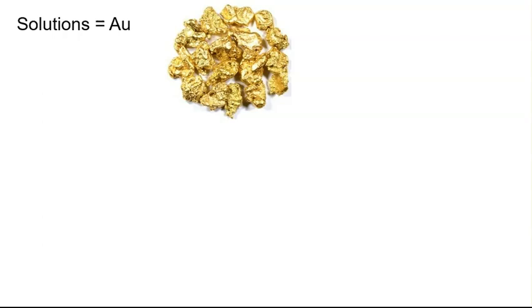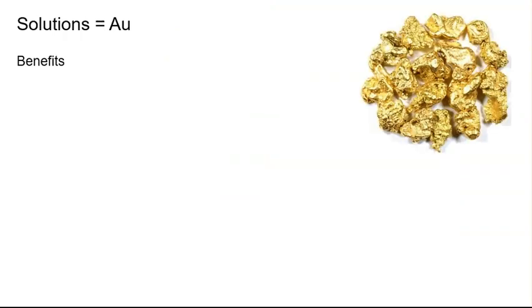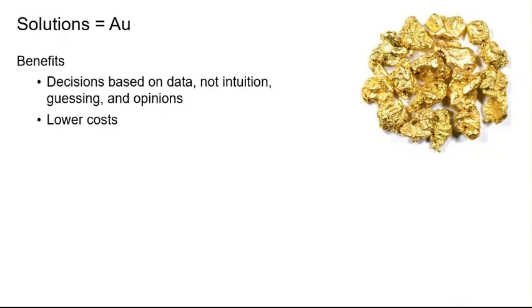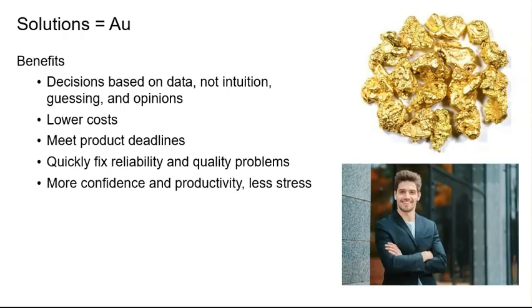Solutions to turn losses into gains. Solutions to the problems can be found through better component design and by using a rigorous engineering process for solving reliability and quality problems. The benefits are decisions based on real data, not intuition, guessing, and opinions. Lower costs associated with fixing quality and product problems. Meeting product deadlines. Quickly fixing reliability and quality problems. And more confidence and productivity and less stress.